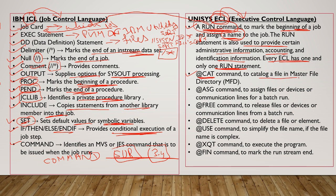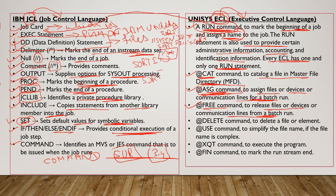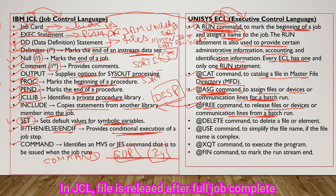In Unisys ECL, the CAT command is used to catalog a file in the master file directory, whereas in JCL we used the DD statement to create a file. The ASG command assigns a file, device, or communication line for a batch run — similar to SYSIN or SORT IN/SORT OUT in JCL. The FREE command releases files or devices from a run.